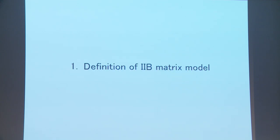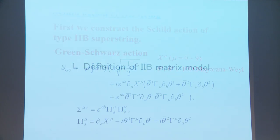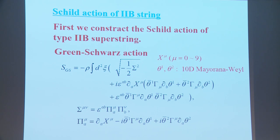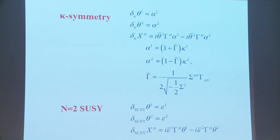This is the 2B matrix model. The definition is as follows: we construct the Schild action of type 2B superstring, which is a Green-Schwarz action in the form of the Nambu-Goto action. Here we have X_μ and θ1, θ2, which are 10-dimensional Majorana-Weyl spinors. The action is rather complicated, but the key point is that it has kappa symmetry and N=2 supersymmetry.